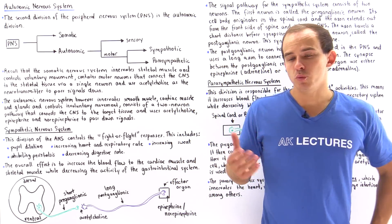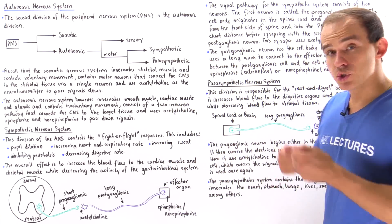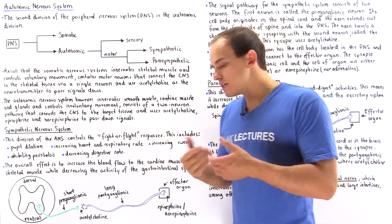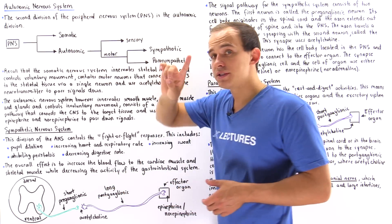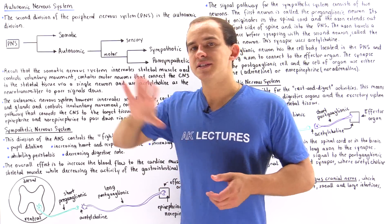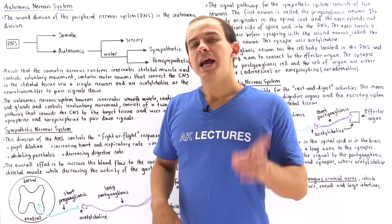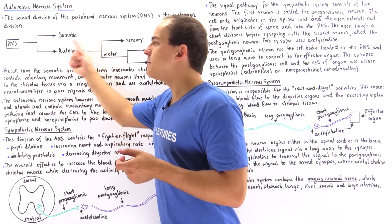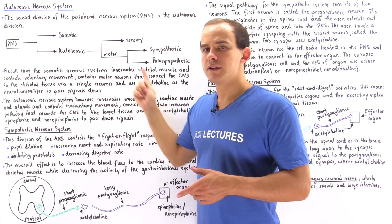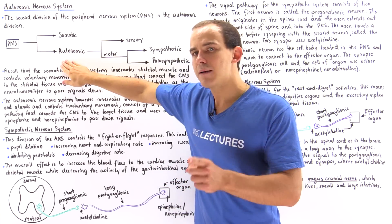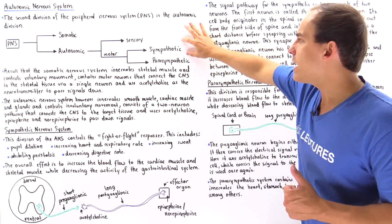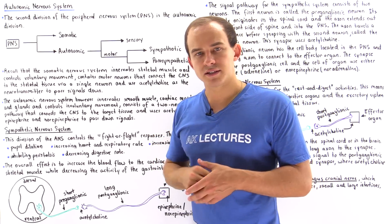The peripheral nervous system of the human body is broken down into two: the somatic nervous system and the autonomic nervous system. Previously we discussed our somatic system, which consists of two divisions: the sensory division and the motor division. In the same exact way, the autonomic nervous system also consists of a sensory division and a motor division, but the motor division is further subdivided into two — the sympathetic and the parasympathetic systems.